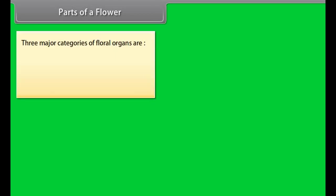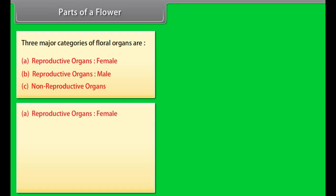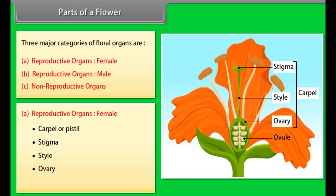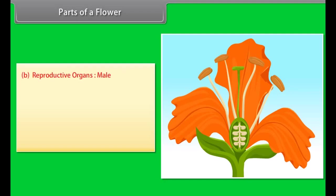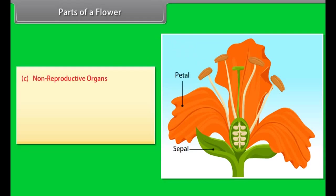Parts of a flower. Three major categories of floral organs are: reproductive organs — male stamen (consisting of anther, filament, and pollen) and female pistil — and non-reproductive organs, including petals (corolla) and sepals.